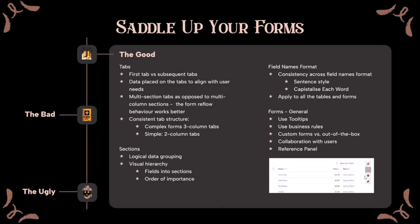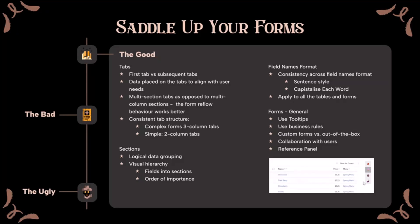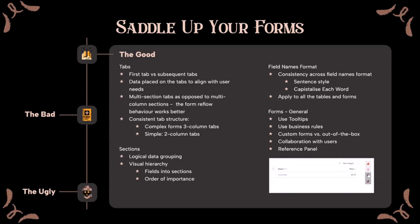Let's start with what the good looks like for forms. Well-designed forms can enhance user experience and satisfaction. Place the frequently accessed data on the first tab and the rest of the fields on subsequent tabs. Use multi-section tabs instead of multi-column sections, as the forms reflow behavior works better — sections will reflow beneath each other instead of fields being resized. Implement consistent tab structures: I recommend using three-column tabs for complex forms and two columns for simple ones. Using sections helps create a visual hierarchy, which assists users in digesting extensive data more easily.